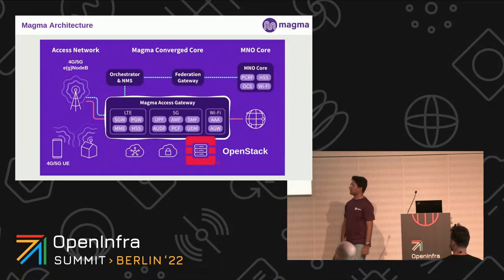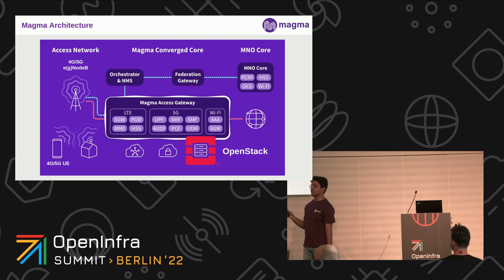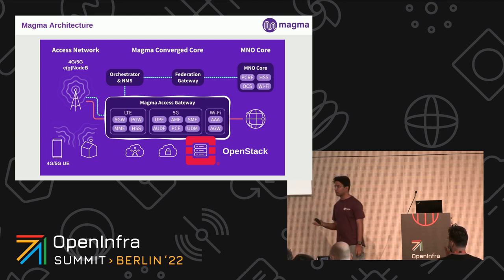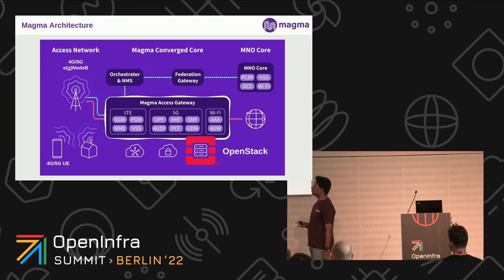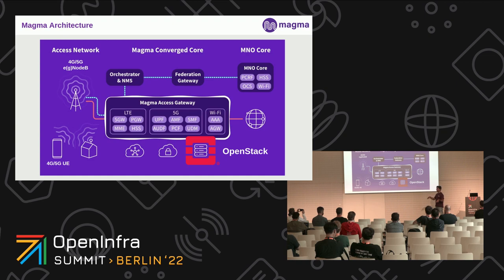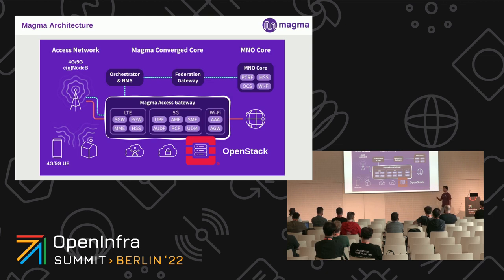Here's Magma's architecture. Right now we have three main projects. One is Magma's Access Gateway that contains the LTE core, 5G core, and Wi-Fi — we can support all of these with our Access Gateway. We also have the Orchestrator, which manages all our gateways, and a third project: the Federation Gateway. The Federation Gateway is used for managing existing MNO core services such as HSS, POCS, and Wi-Fi.